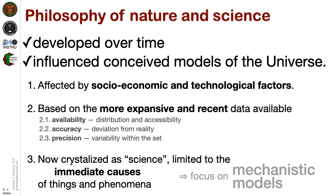In order to understand how the different models of the universe develop over time, we need to understand that the development of physical models is very dependent on our philosophy of nature and science itself. The development is highly influenced by socio-economic and technological factors available at the time. It is usually based on the most expansive and recent data available, such as availability, accuracy, and precision of such data.